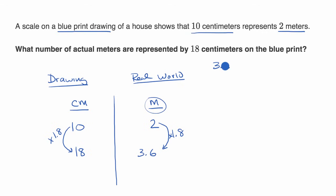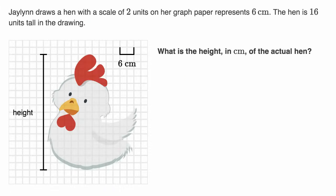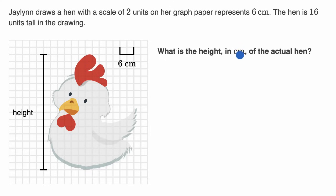So 3.6 meters in the real world is what 18 centimeters on the blueprint represents. Let's do another example. Jalen draws a hen with a scale where two units on her graph paper represents six centimeters in the real world. The hen is 16 units tall in the drawing. What is the height in centimeters of the actual hen?